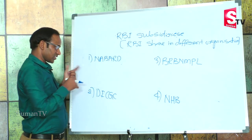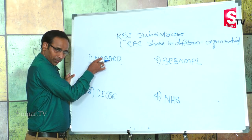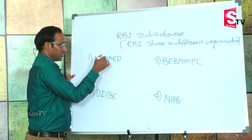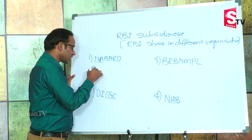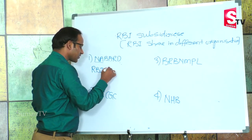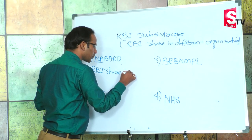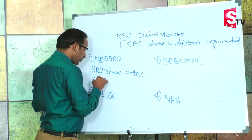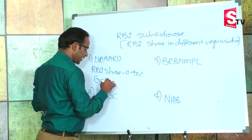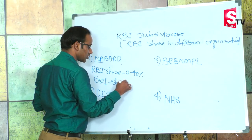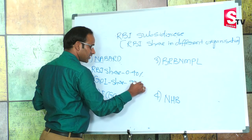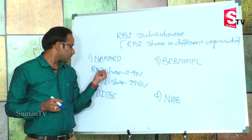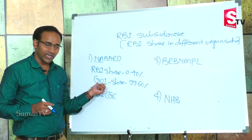The first RBA subsidiary is NABARD — National Bank for Agriculture and Rural Development. The RBA share in NABARD is 0.4%, and the remaining share belongs to the Government of India, which holds 99.60%. So the RBA share is very less in NABARD, and the majority share is held by the Government of India.